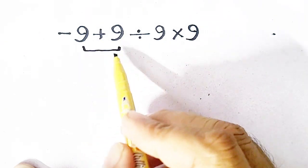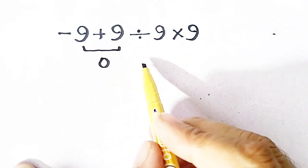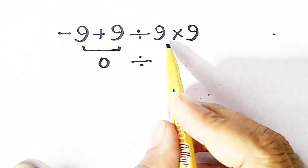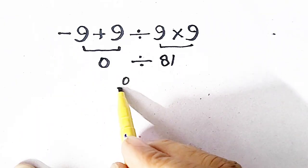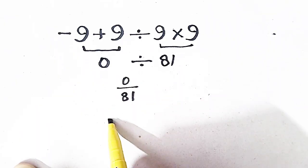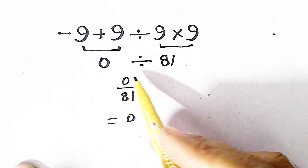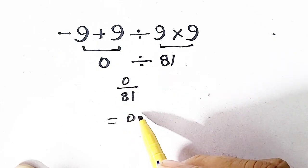Minus 9 plus 9 will be equal to 0. Divided by 9 times 9 will be equal to 81. So 0 over 81 will be equal to 0, because 0 by anything is 0.